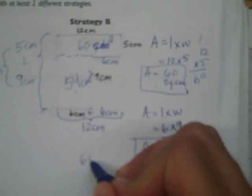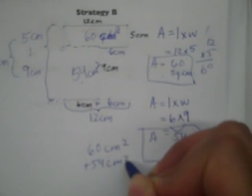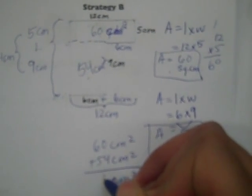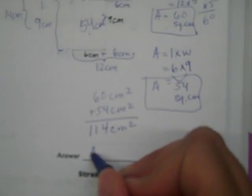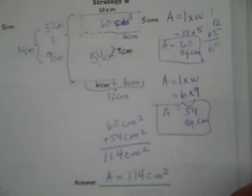Now, both of these shapes made up this irregular polygon. And this was 54 square centimeters. So I'm going to add both of these together. 60 square centimeters plus 54 square centimeters. My units of square centimeters is 114 square centimeters. My answer is area equals 114 square centimeters.